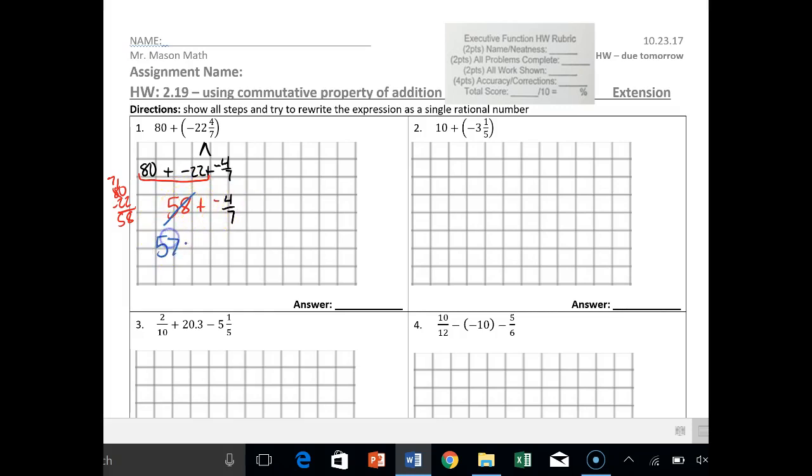So 57 plus 7 sevenths plus negative 4 sevenths, and then again this is different signs so I subtract, so I have 57 and 7 minus 4 is 3 sevenths. Please put all of your answers on the answer line.